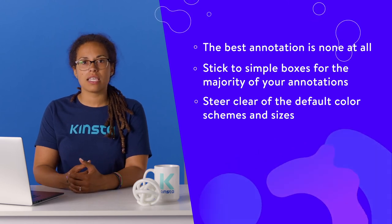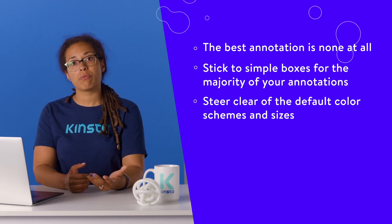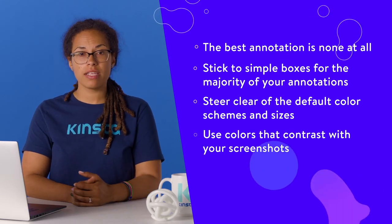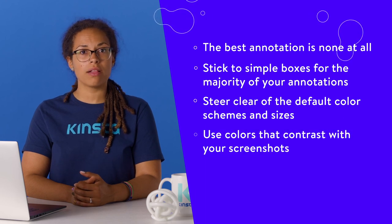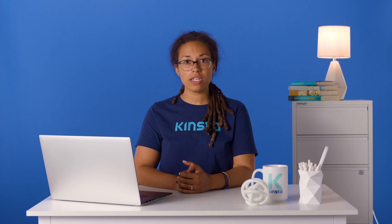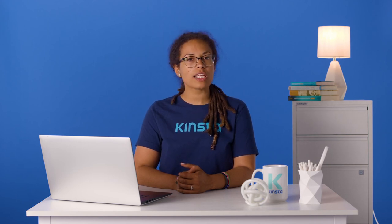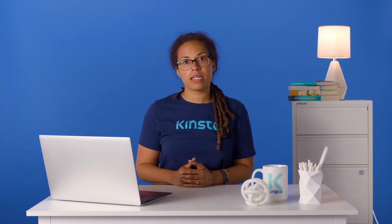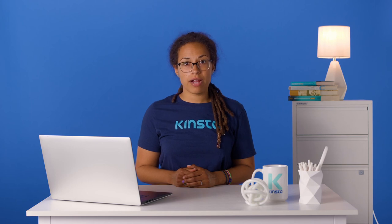Steer clear of the default color schemes and sizes — it's easy to tell if someone's used Skitch or Preview because they both use distinct colors for annotations. Use colors that contrast with your screenshots, but keep it consistent throughout all the annotations you make. A yellow or orange color often works well, and you'll notice that Kinsta uses our familiar purple for annotations on the blog. You'll sometimes grab sensitive information along with your screenshots, especially if you're using an account-based app or working with system files. In these cases, it's a good idea to obfuscate the information using a suitable tool. Skitch, Snagit, and CleanShot X all have this obfuscation option — a much better option than pen scribbles or ugly boxes.